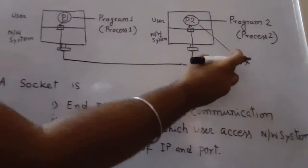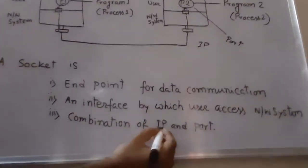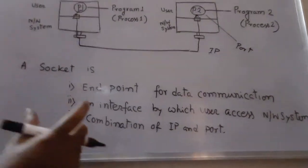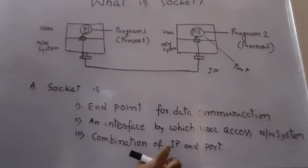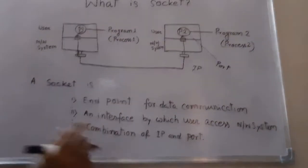Any system that wants to communicate with another system needs the destination IP address and the port number. That's why the combination of IP and port is also called the socket. So the socket is the combination of IP and port.